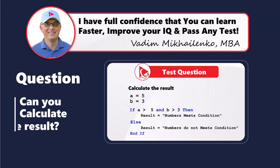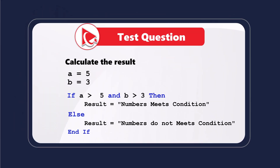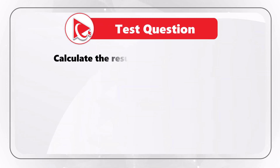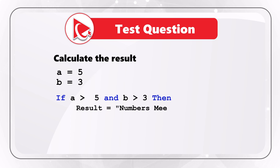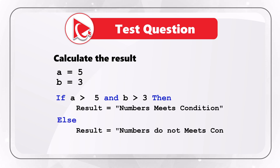Here's an interesting question where you need to calculate the final value of result. You're presented with a subroutine where a equals 5, b equals 3. Then comes the condition: if a is greater than 5 AND b is greater than 3, then result equals 'meets condition', else result equals 'does not meet condition'. Take a close look to see if you can calculate the final value of result.